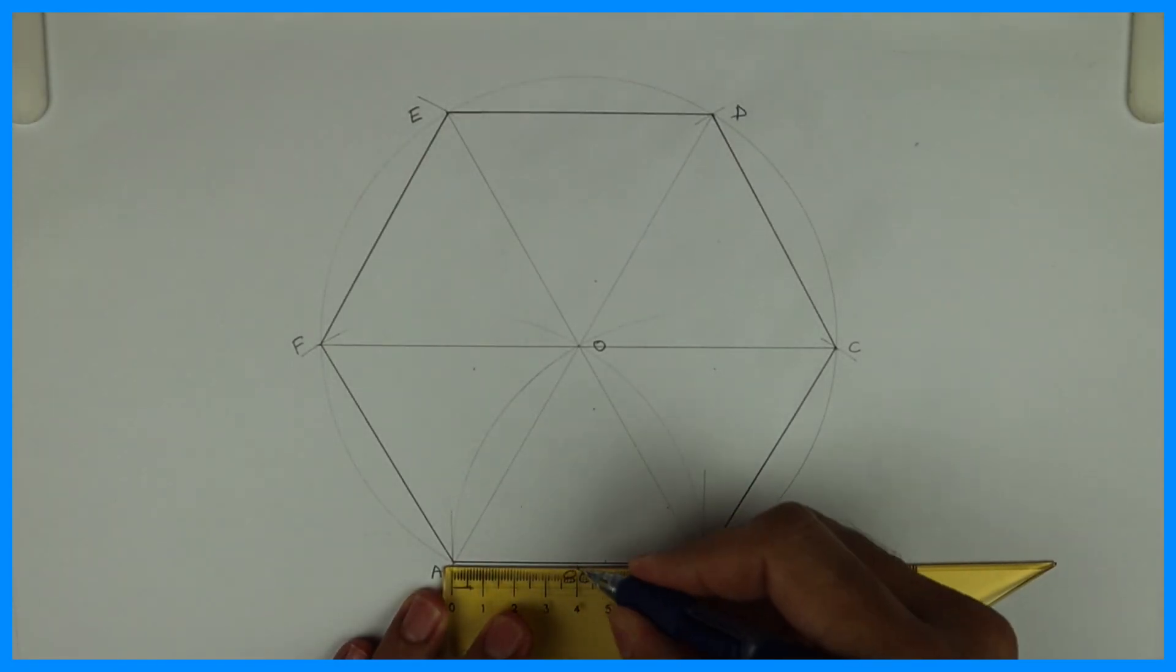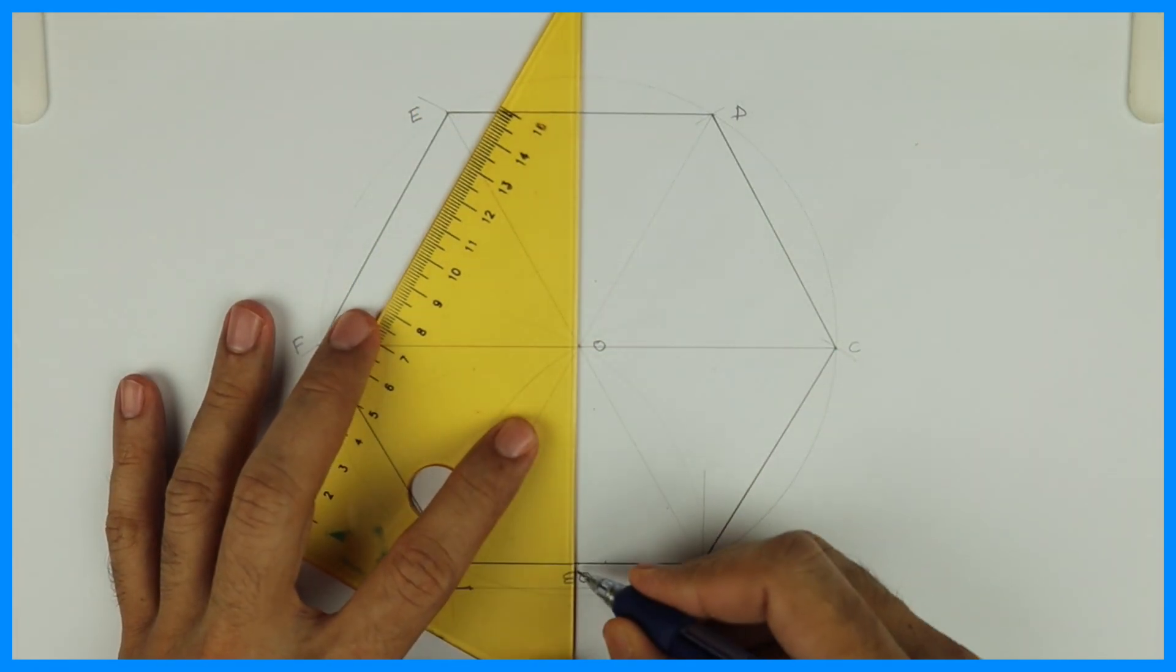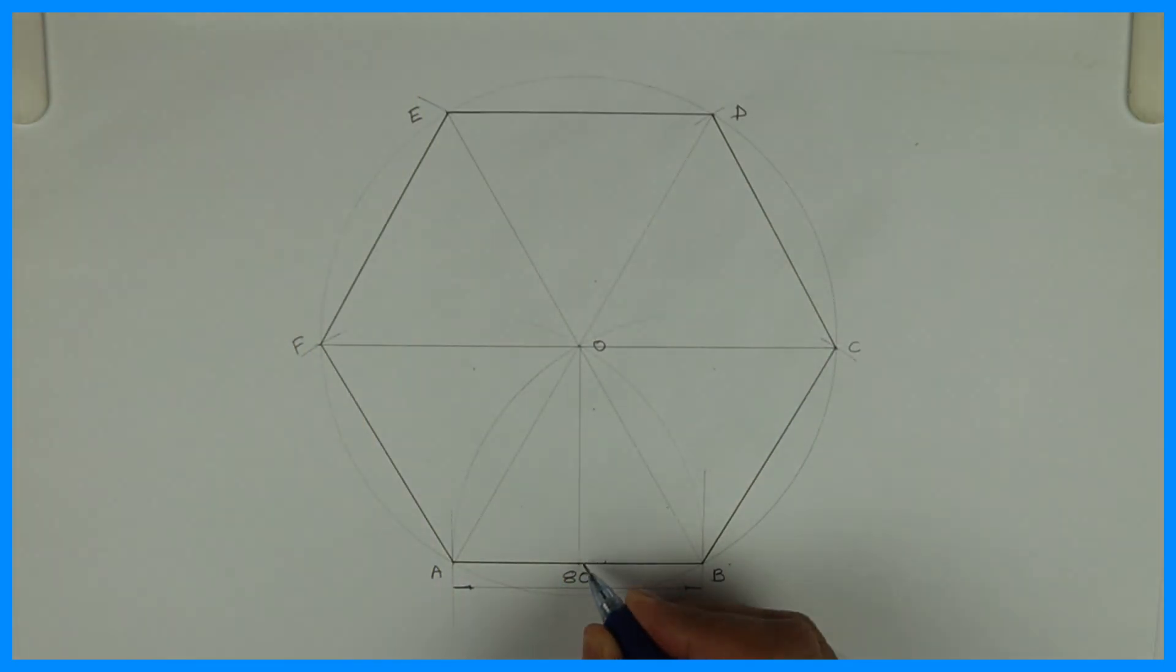Now we'll take midpoint of all the sides and we'll join to the opposite point or O. We can join to O.